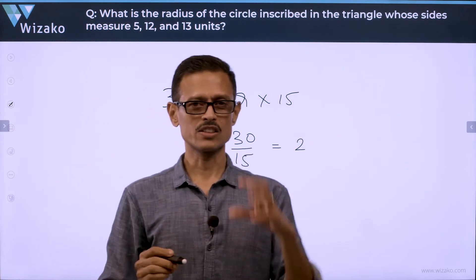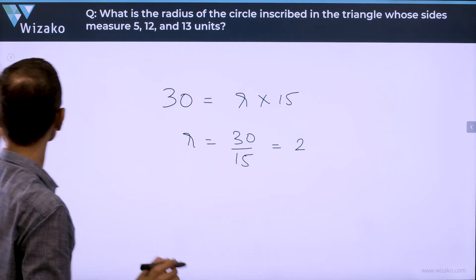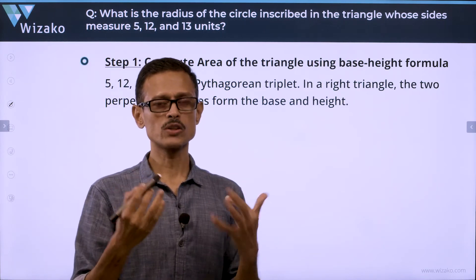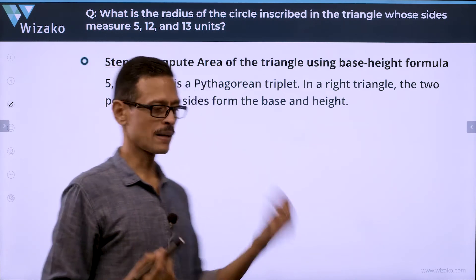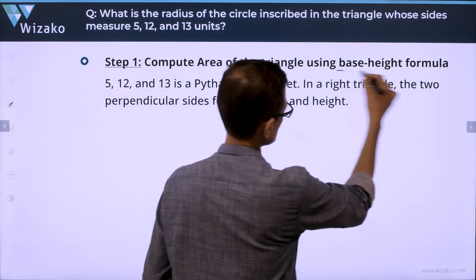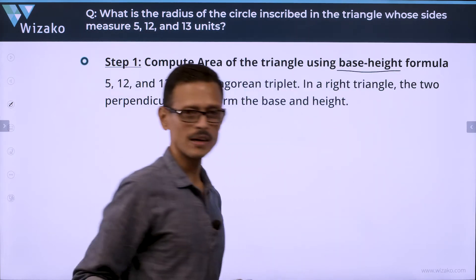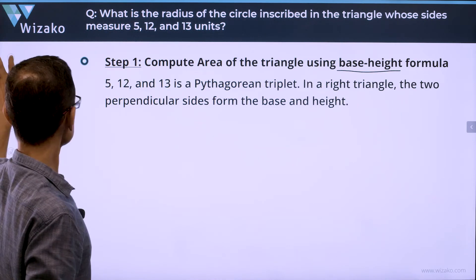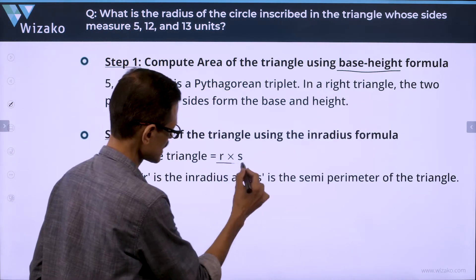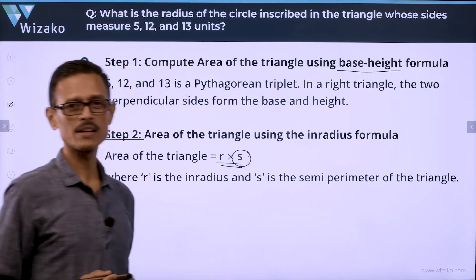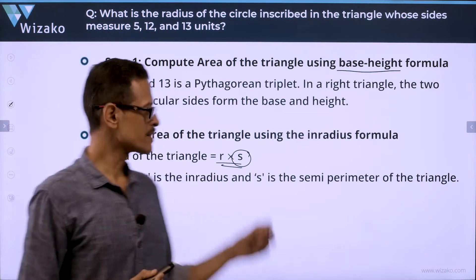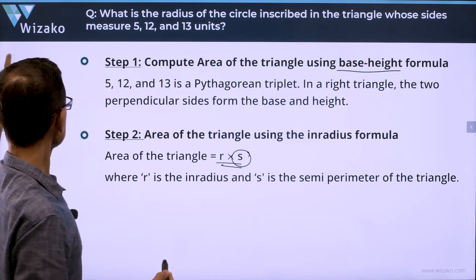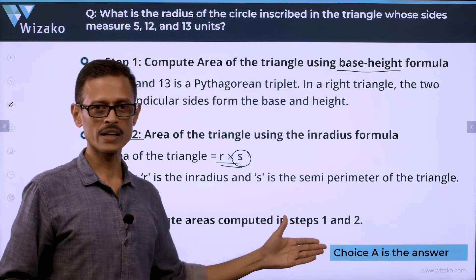To quickly summarize Method 1: we equated the areas using two methods. The first method uses the formula half times base times height, giving 30 square units. The second method uses the formula R times S, where S is the semi-perimeter (perimeter divided by 2), leaving us with the unknown R. Step 3 equates the areas computed in steps 1 and 2. Choice A is the answer.